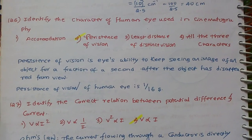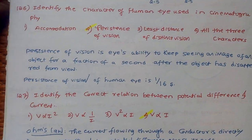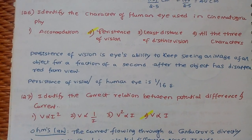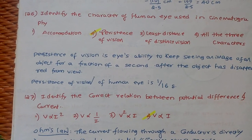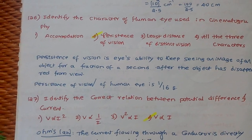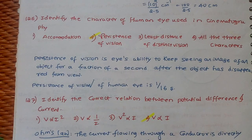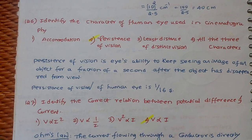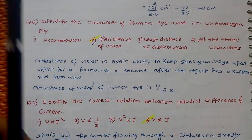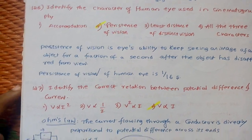Persistence means if you see any image, for how much time it will be in your eye. That indicates persistence of vision. For human eye, persistence of vision is 1/16th of a second. So the answer is persistence of vision.